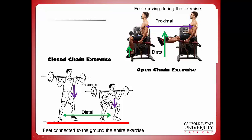So in closed chain, the proximal segment moves on the distal. In open chain, the distal segment moves and the proximal is stationary.